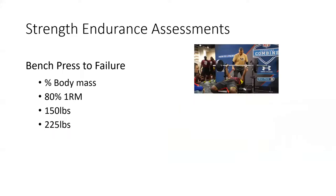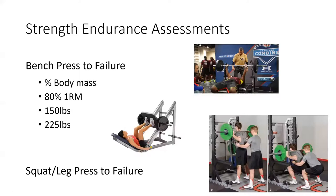Strength endurance assessments include the NFL combine's bench press test — using 225 pounds to failure — which measures the ability to produce force repeatedly. You can also use a percentage of 1RM (e.g., 80%) or a percentage of body mass and count how many repetitions can be performed. I like to use body mass as an indicator: if an athlete can move 100% of their body mass in a bench press for a certain number of repetitions, I know they have sufficient strength endurance.